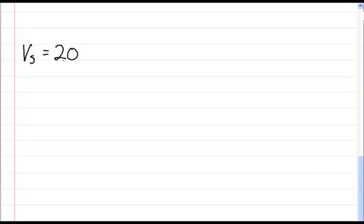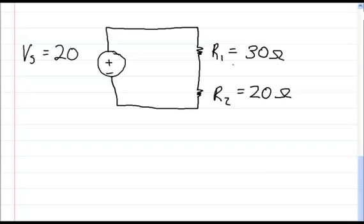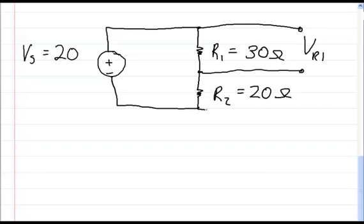Now let's make a second problem with different resistances. The voltage of the power supply is 20 volts. We've got R1, which is equal to 30 ohms, and R2, which is equal to 20 ohms — so they're not going to drop an equal amount of voltage. You would measure VR1 across R1, and VR2 across R2 with your probes.